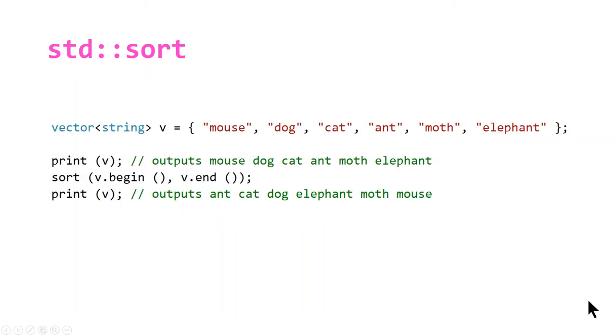Here's a slightly different example using strings instead of integers. We declare our vector using an initializer list equal to mouse, dog, cat, ant, moth, and elephant. I tried to include different strings of different lengths, some that have the same first character. If we call print, it outputs the same order: mouse, dog, cat, ant, moth, and elephant.